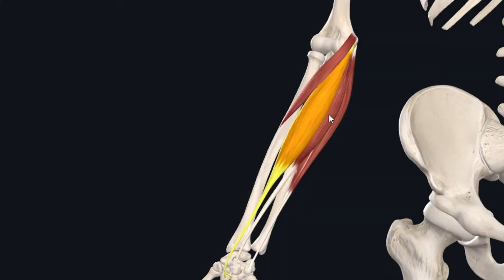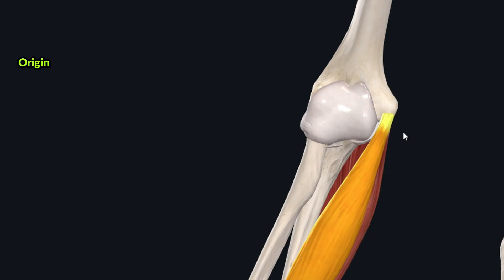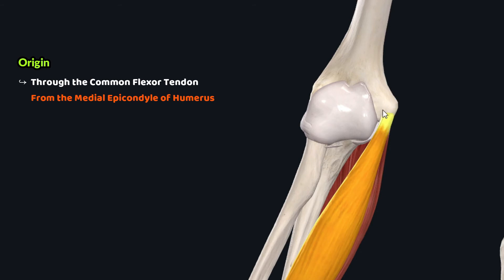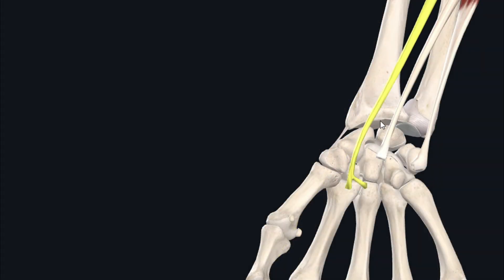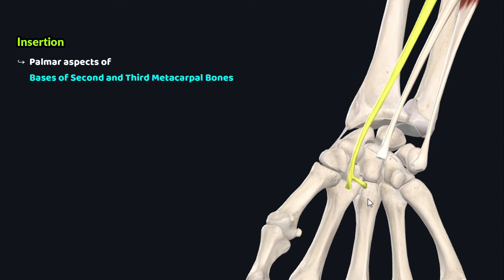The third muscle of this group is the flexor carpi radialis, a fusiform shaped muscle that lies further lateral to the palmaris longus. This muscle originates through the common flexor tendon from the medial epicondyle of the humerus. The tendon of origin forms a fusiform shaped muscle belly which travels inferolaterally towards the hand, and this muscle belly then inserts through a long tendon onto the palmar aspects of the bases of the second and third metacarpal bones.